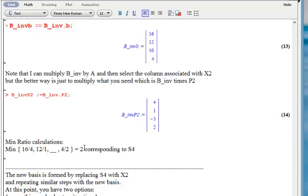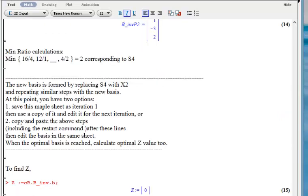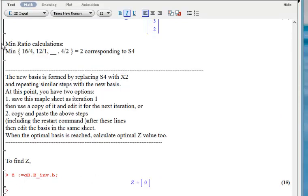The min ratio is 2, which corresponds to the last value, corresponding to S4. Therefore, X2 is going to enter the basis replacing S4. At this time, we don't really need to do the Z calculation, but that's how you calculate Z value. The value is zero in this case because CB is zero.